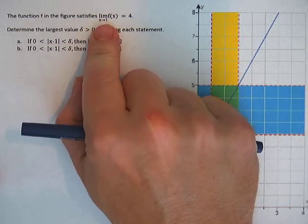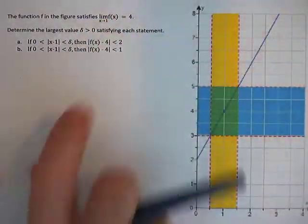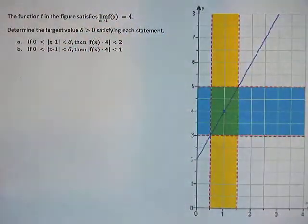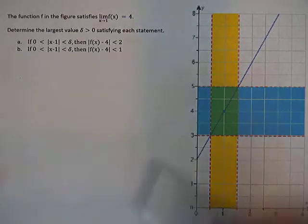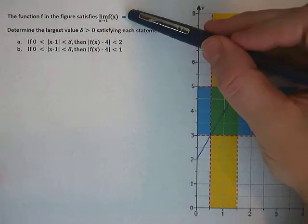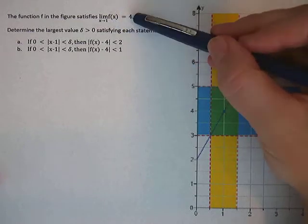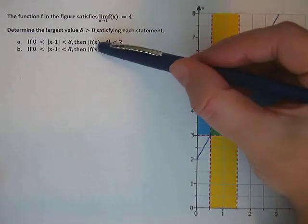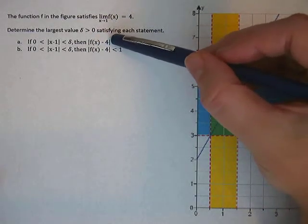So if it said x is approaching 10, then this number here would be a 10, x minus 10. And the 4 came from right here. So when the function is equal to a number, it's saying how close is the function getting to that number.